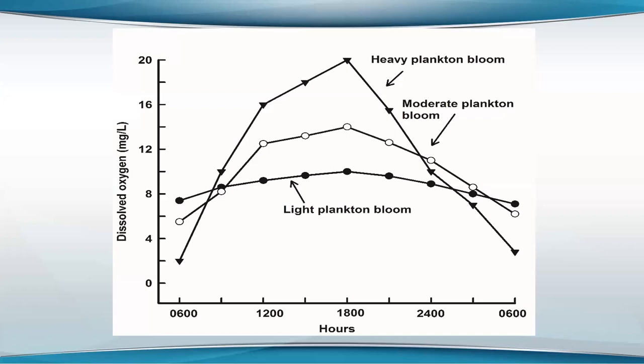In some of these heterotrophic systems, the plankton basically disappears — it's all replaced with bacteria. And then aeration becomes a large source of oxygen even in the pond.